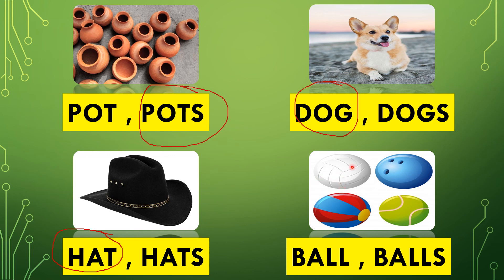Children, tell me — one or many? Many. So which one will we circle — no S or S? S. Why S? Because many. That's why we will circle B-A-L-L-S, balls. What will we circle? B-A-L-L-S, balls.